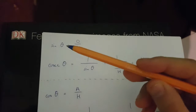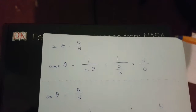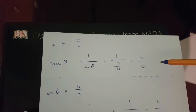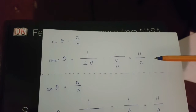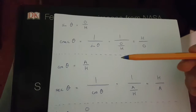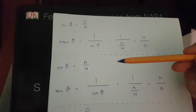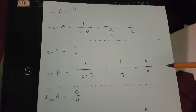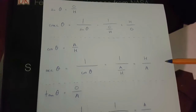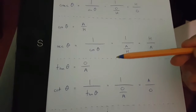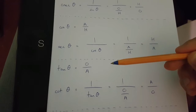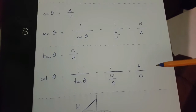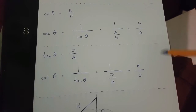We need to know that sinθ is opposite over hypotenuse, cosθ is adjacent over hypotenuse, secθ is hypotenuse over adjacent, tanθ is opposite over adjacent, and cotθ is adjacent over opposite.